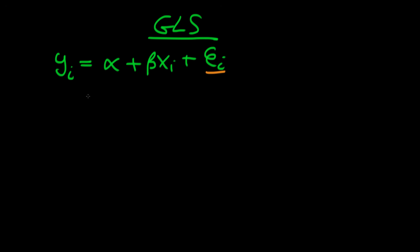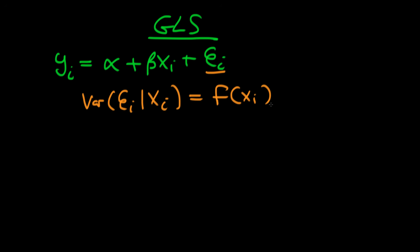The first condition is that the variance of the error term ei, given our independent variable xi, is given by some function of xi which in general doesn't equal just some constant. That constant case would be the situation where we had homoskedastic errors.